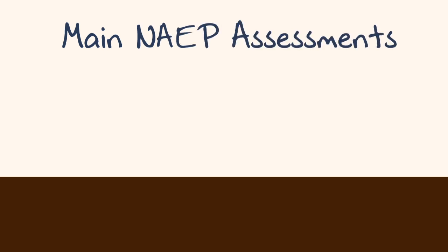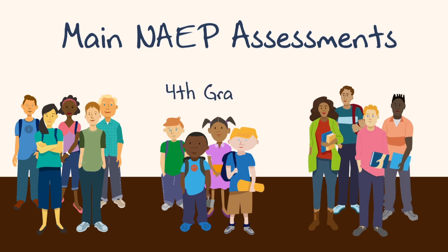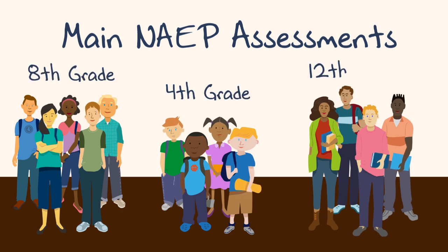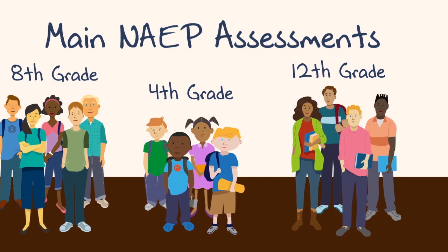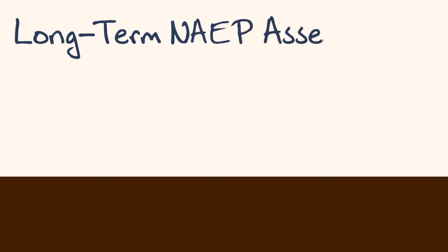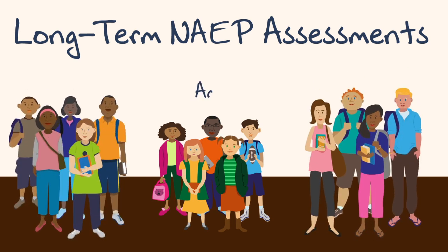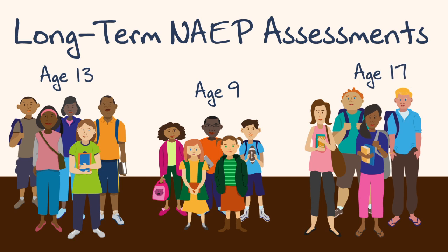Main NAEP assessments are given every two years to a selection of students from the 4th, 8th, and 12th grades. No other grades are tested during main NAEP assessments. However, there is also a version of NAEP administered to examine long-term trends. Every four years, a selection of 9, 13, and 17-year-old students will take long-term trend NAEP tests. Only those grades and ages are tested, and only at certain schools.